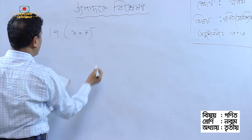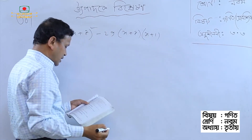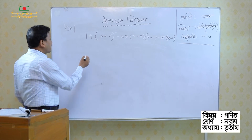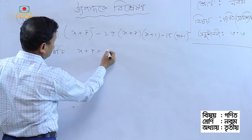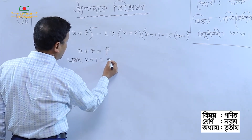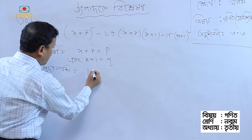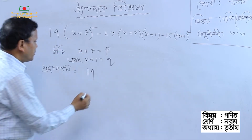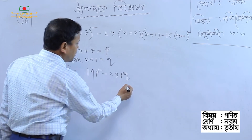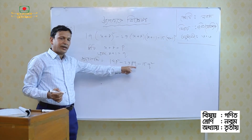Now: 14 times x plus z whole squared minus 29 times x plus z times x plus 1 minus 15 times x plus 1 whole squared. According to the previous method, we put x plus z equal to P and x plus 1 equal to Q. We have learned the middle term break.